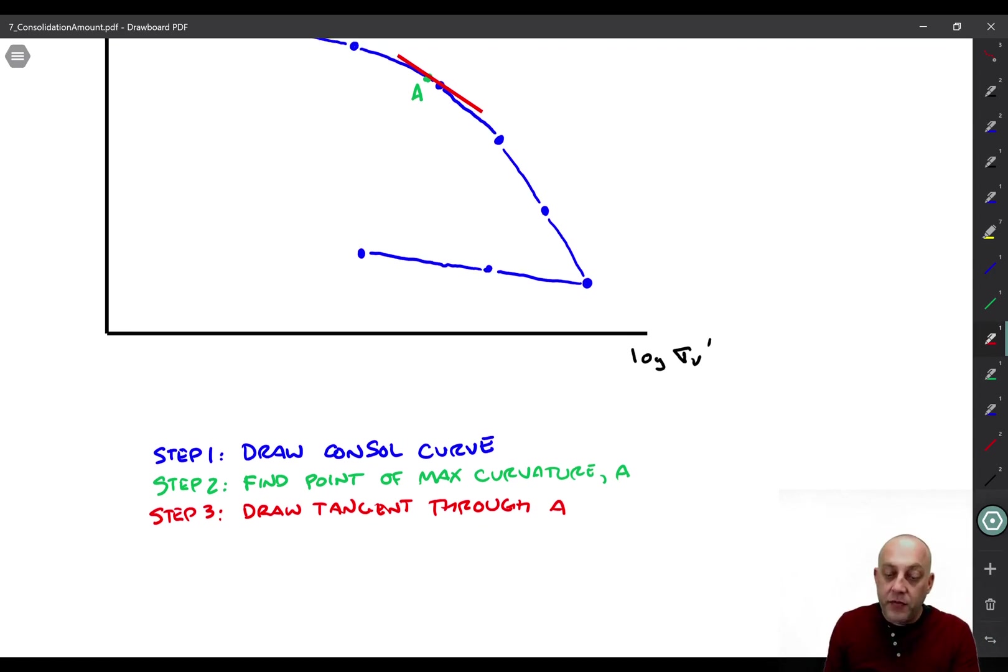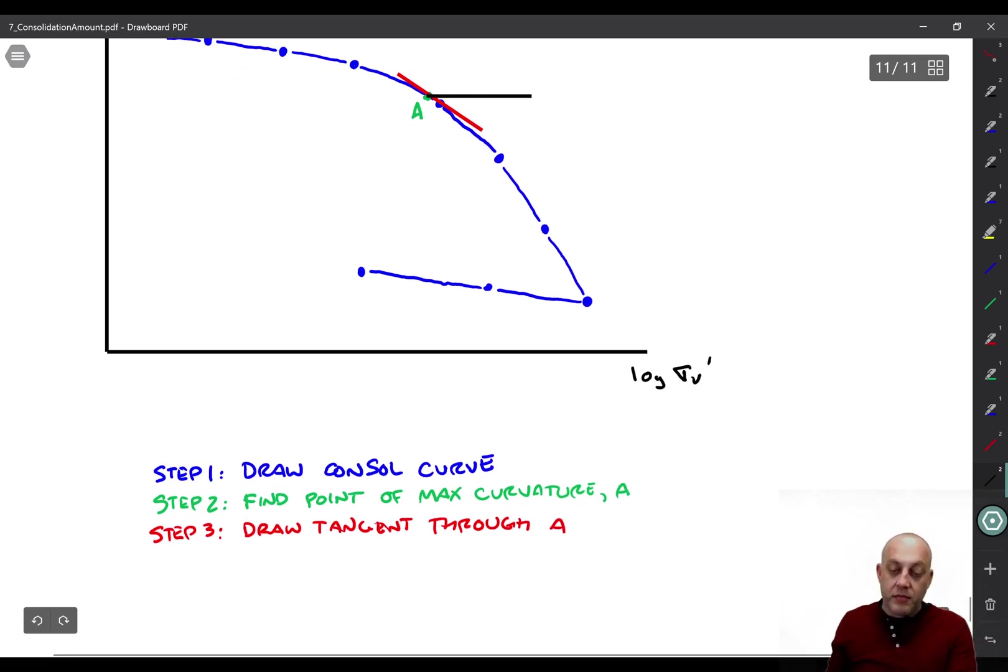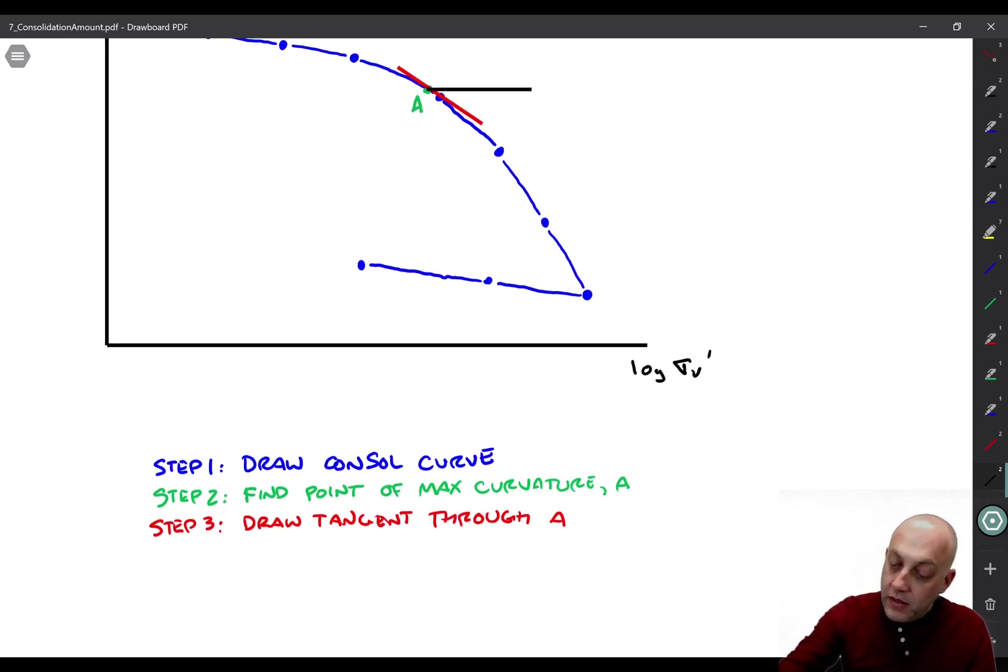Alright, and then number four, we'll draw a horizontal line through point A. So I'm going to make that a black line. This one, here's a horizontal line. And then we can come down here. Step four, draw a horizontal line through point A.